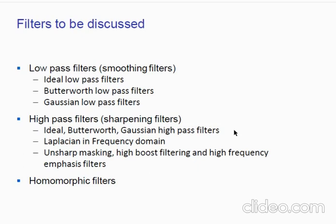Today we are going to discuss some filters that work in the frequency domain. We will learn about different types of filters and how they work. Low pass filters are smoothing filters and there are three types: ideal, Butterworth, and Gaussian. High pass filters are sharpening filters; among them we also have ideal, Butterworth, Gaussian, Laplacian, unsharp masking, high boost filtering, and high frequency emphasis filters. Apart from these, we also have homomorphic filters.